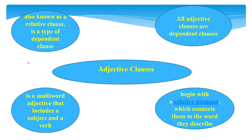All adjective clauses are dependent clauses. A dependent clause is a group of words that consist of a subject and a verb, yet it is not a complete sentence that can stand alone. Adjective clauses begin with a relative pronoun, which connects them to the word they describe, such as: that, where, when, who, whom, whose, which, why.